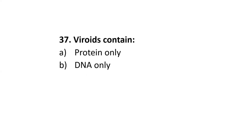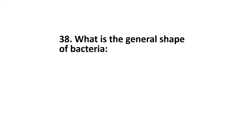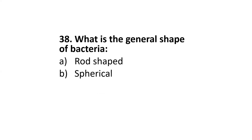Next: viroids contain — protein only, DNA only, RNA and protein, or RNA only? The correct option is D: RNA only. Next: what is the general shape of bacteria — rod-shaped, spherical, spiral, or comma? The correct option is A: rod-shaped.